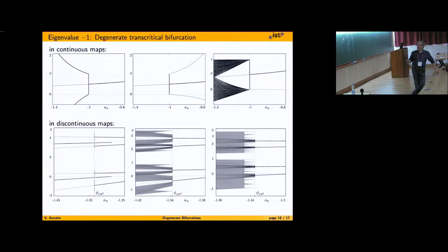In one case nothing happens — the attractor is given by a different cycle which was present already before. Here the border collision of the cycle: it appears and then exists. Here a bistability, and after that only the cycle is stable. So here nothing appears at the degenerate flip bifurcation — you should see the difference.